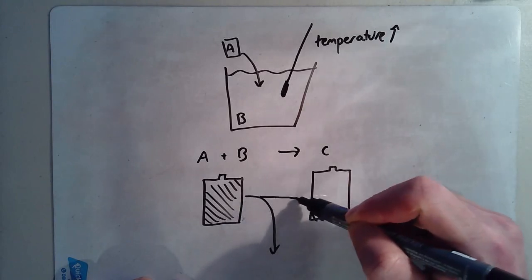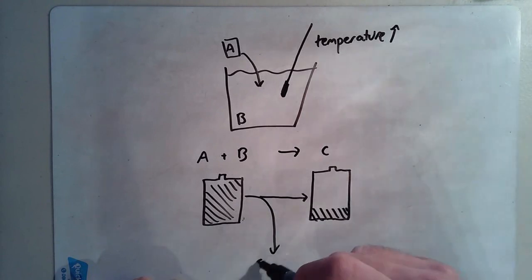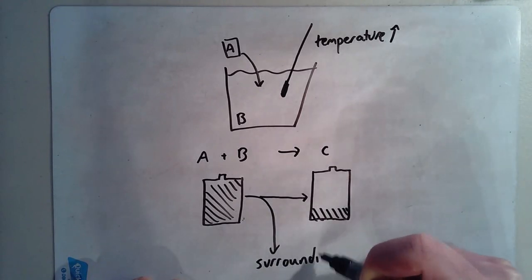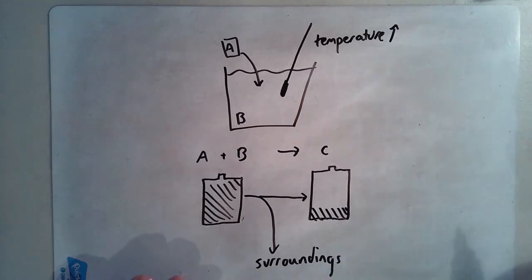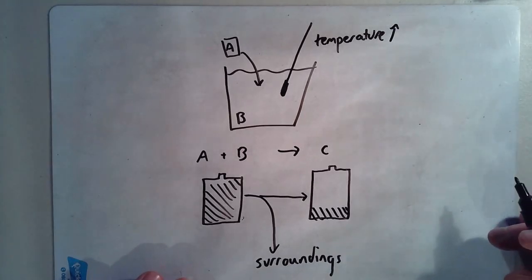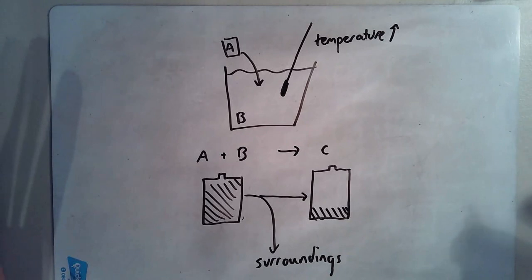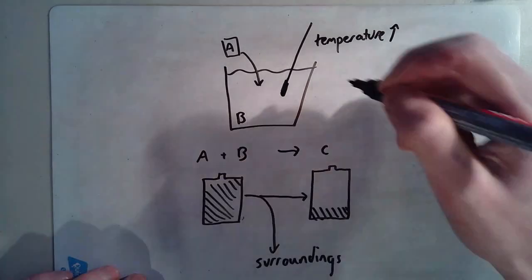It's got to go somewhere. And the answer is it goes to the surroundings. Some of it goes to C, but some of it goes to what's called the surroundings. And the surroundings means anything that isn't A, B or C.